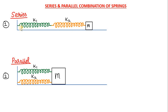In the first figure you can see two springs whose spring constants are k1 and k2 are connected in series with a block of mass m. And in the second figure two springs of spring constants k1 and k2 are connected in parallel to the block m. We can find out what is the equivalent spring constant in both the cases.